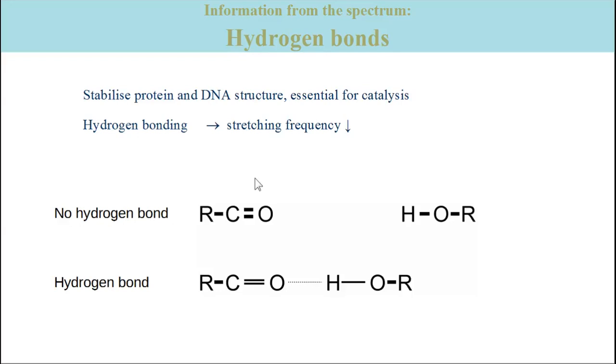The scheme on top shows a carbonyl group and a hydroxyl group which are not hydrogen bonded. The CO and OH bonds are therefore relatively short and the bonds are relatively strong as indicated by the thick lines.